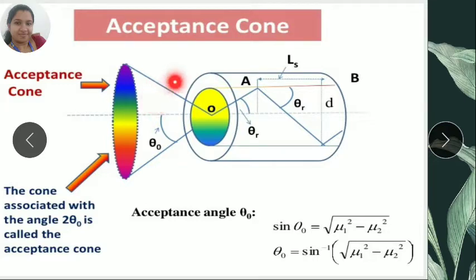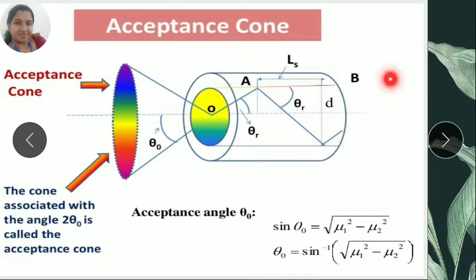If the light ray enters from this region — that is, if we consider this as the incident ray — then this is the angle of incidence, and this region is called the acceptance cone of the optical fiber. If the light ray enters in this region, that particular light ray can be propagated through the core by total internal reflection. Acceptance angle is the angle of incidence at which the light ray can be propagated through the optical fiber by total internal reflection from the top and bottom interface of core and cladding.